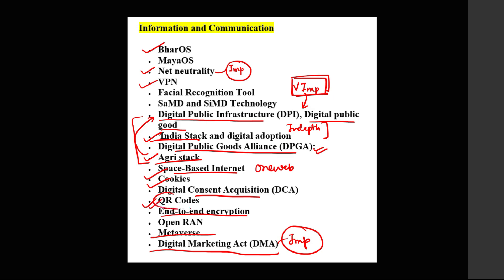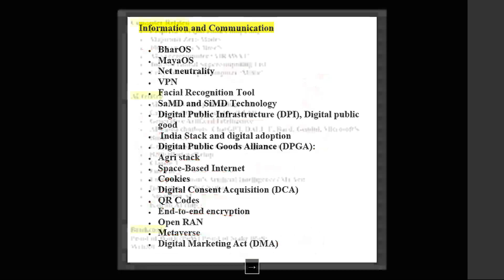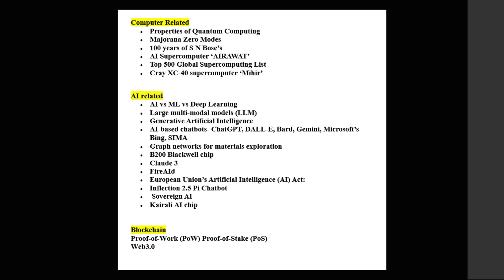Also prepare: what is the metaverse, what is the Digital Markets Act — this is very important — and even QR codes; you can get a question regarding QR codes. Moving on, quantum computers are also important this year. Topics include properties of quantum computers, principles of quantum computing, Majorana zero modes, and 100 years of S.N. Bose. Also important is the AI supercomputer Airawat — an Indian supercomputer in the top 500 ranking — and the Mihir supercomputer.